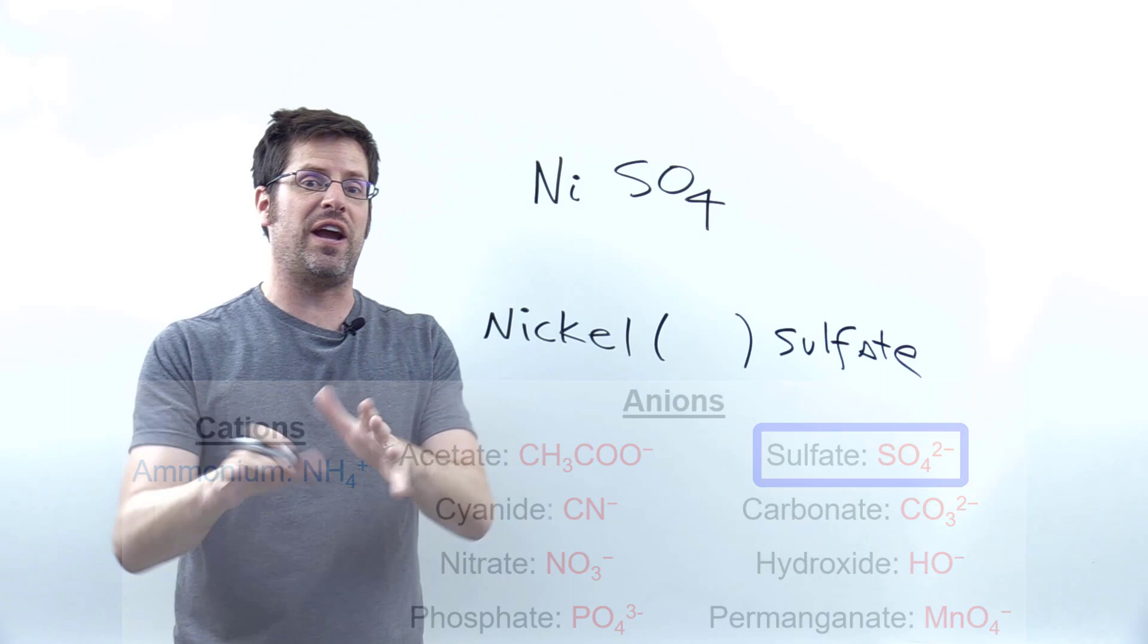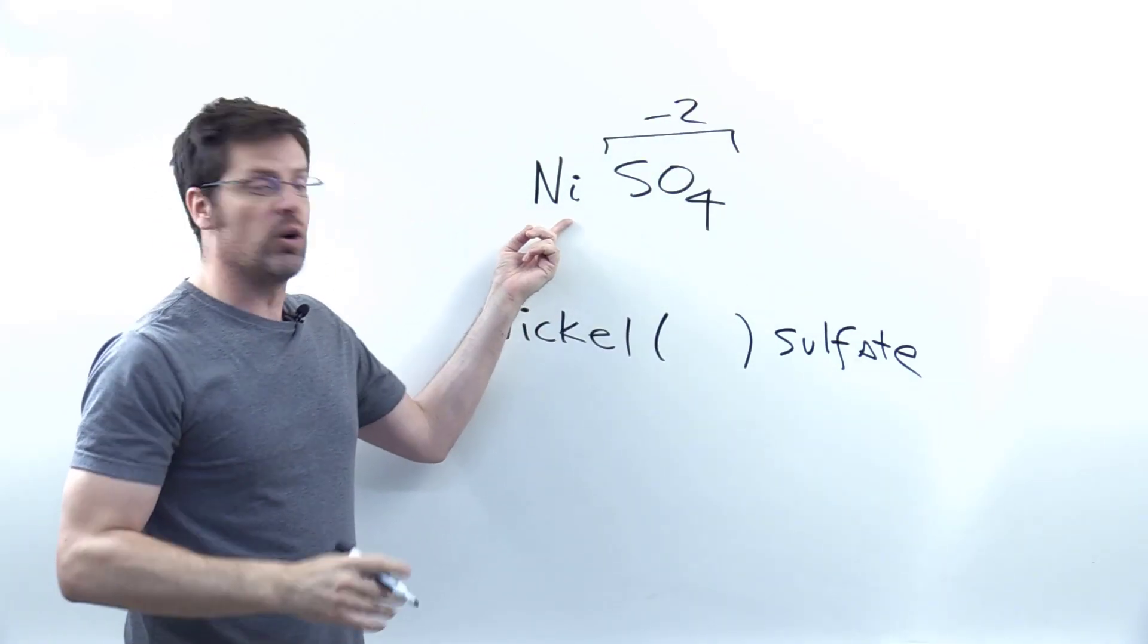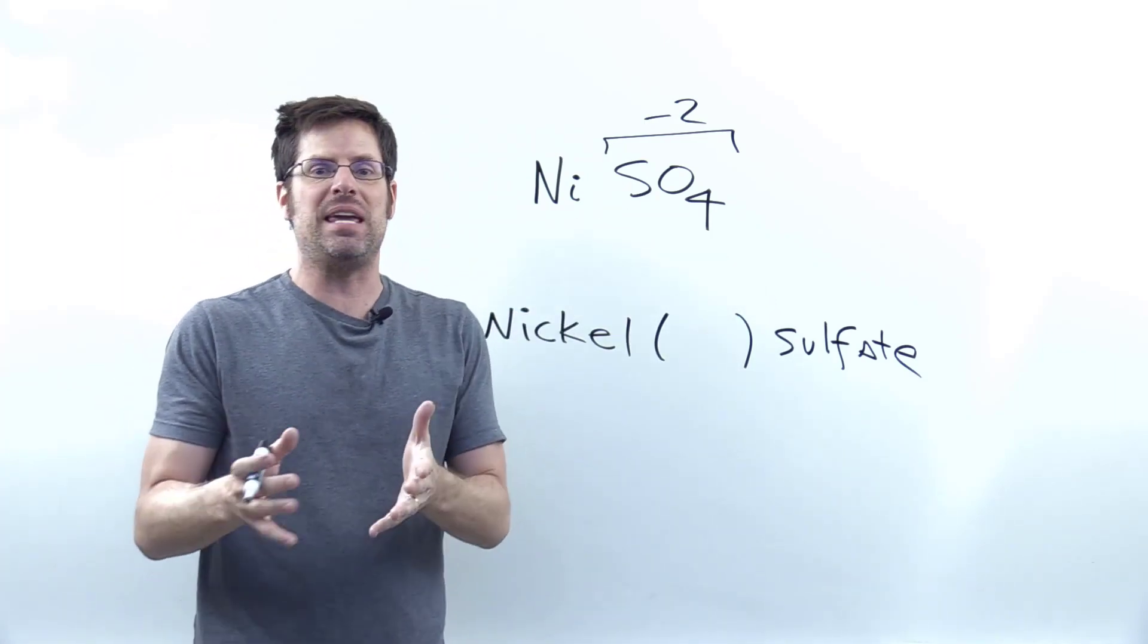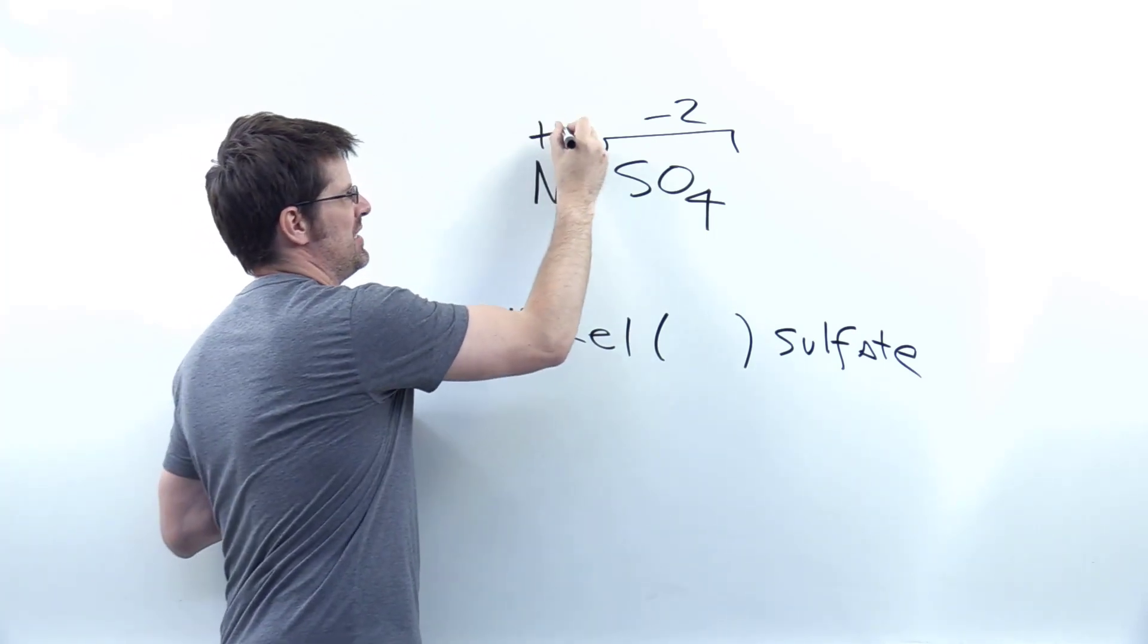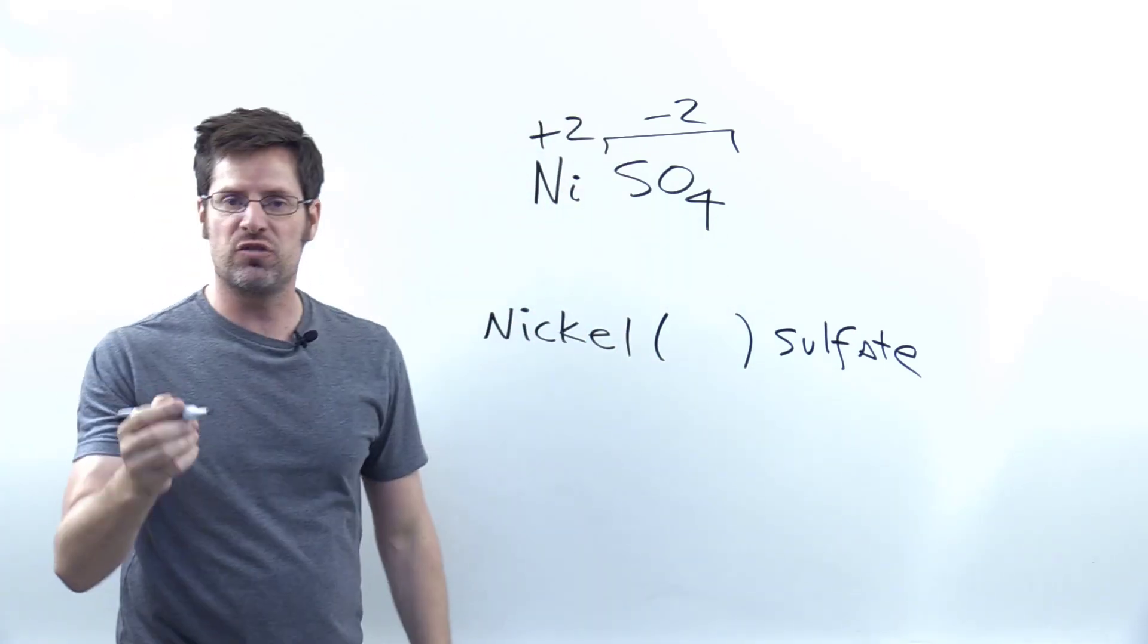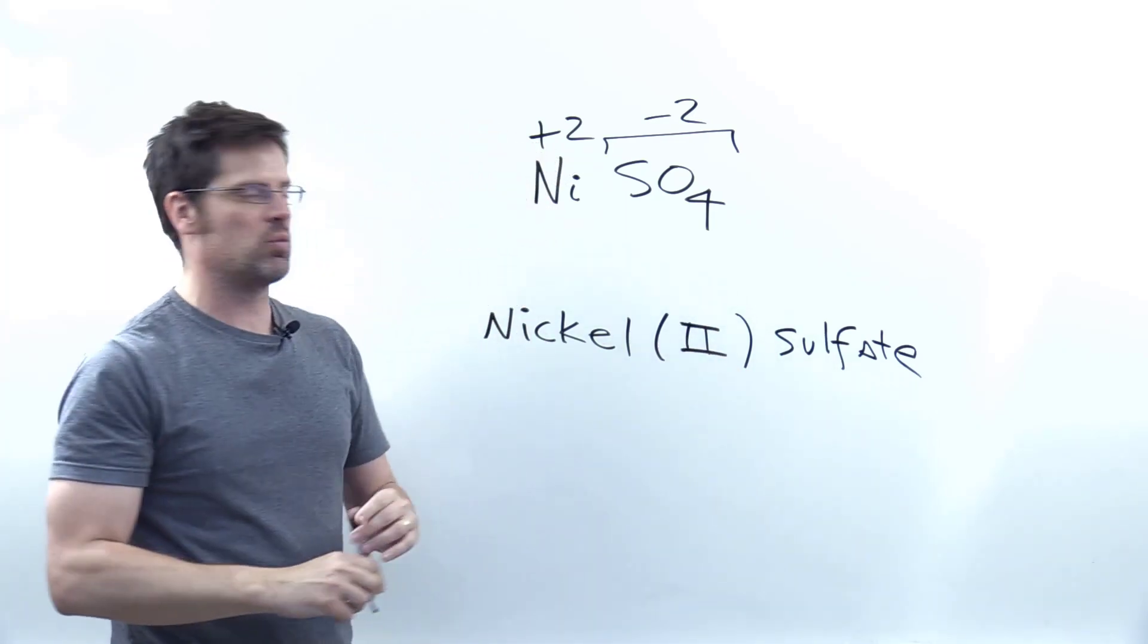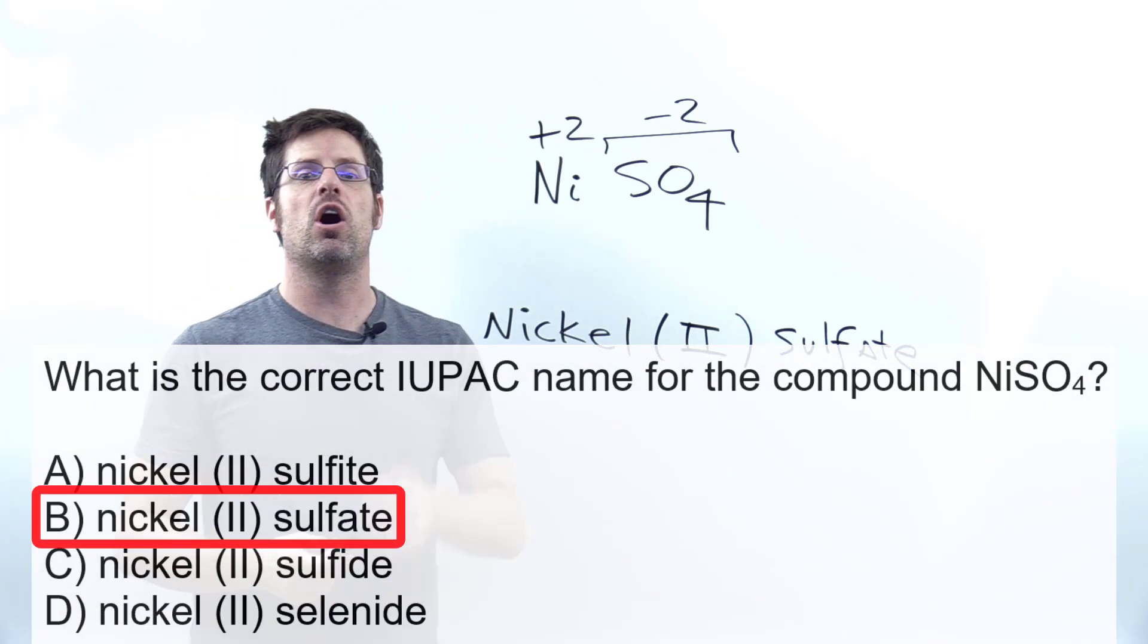Now, as you just saw, sulfate as a whole has a negative two charge. So if I have one nickel atom going together one to one with one sulfate, what must the charge of the nickel atom be in order to balance out that negative two charge? Yeah, it must be a plus two. So this particular nickel in this formula is a plus two nickel. Therefore, we lay down Roman numeral twos right there. Nickel (II) sulfate is the correct name for this compound, which is for this question option B.